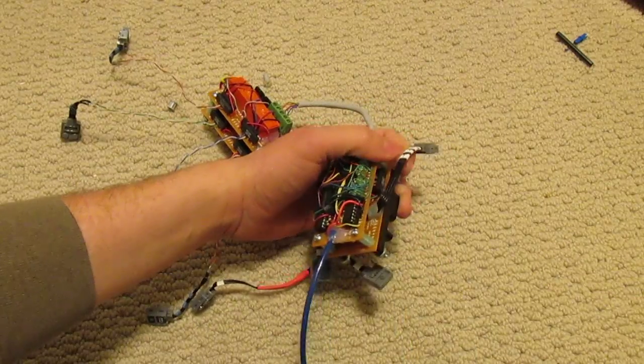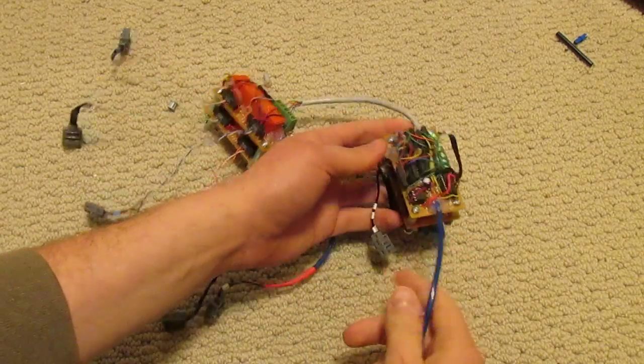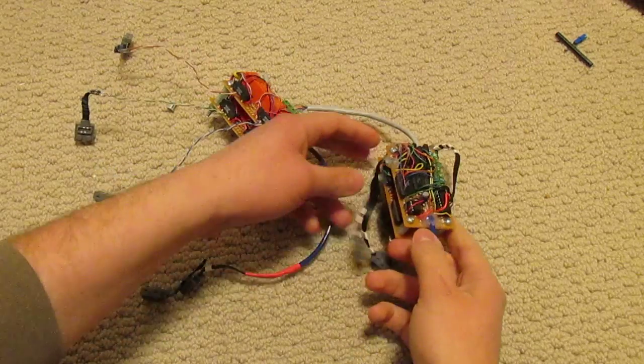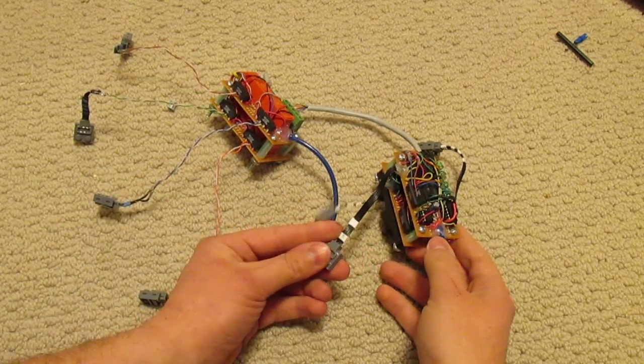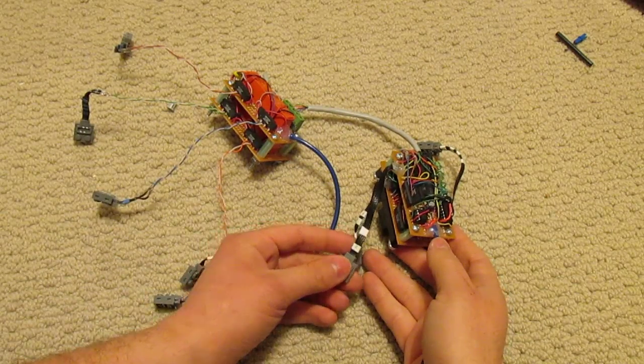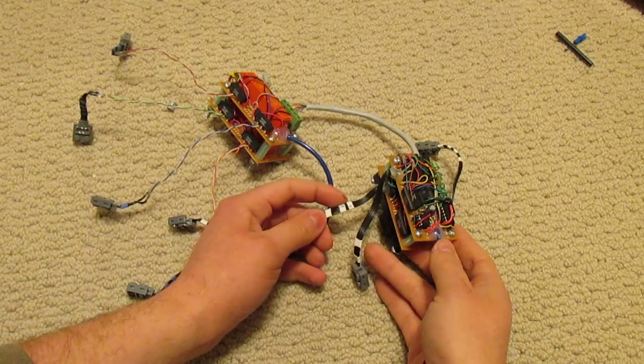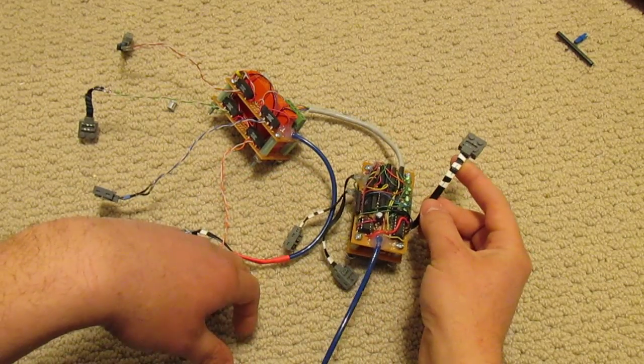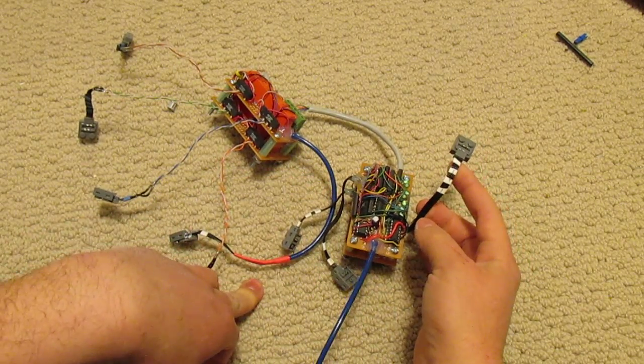I've also done some other updates to it. Power is fed to it through the little blue wire here. The one with two white bands is a direction input. Three white bands is a speed input. And then this one, the four white bands, is a brake input.